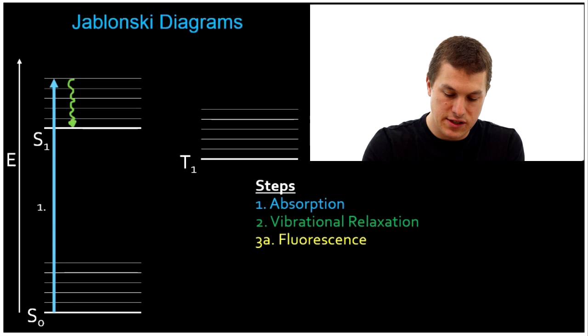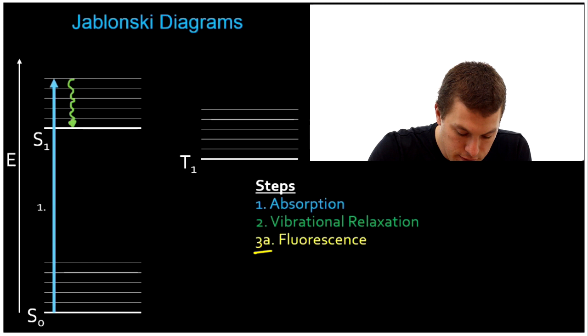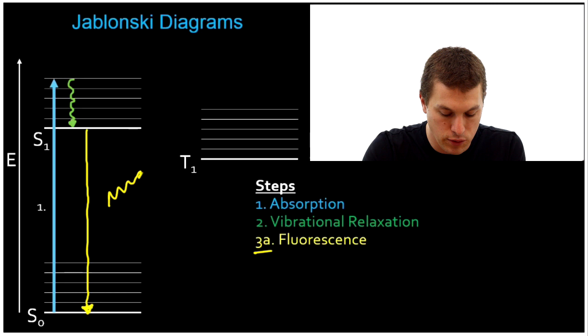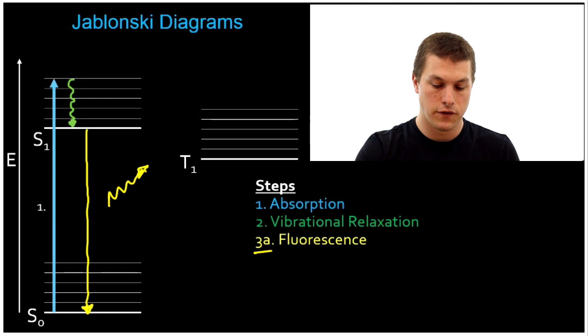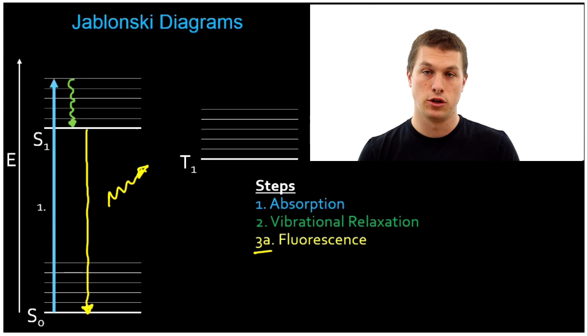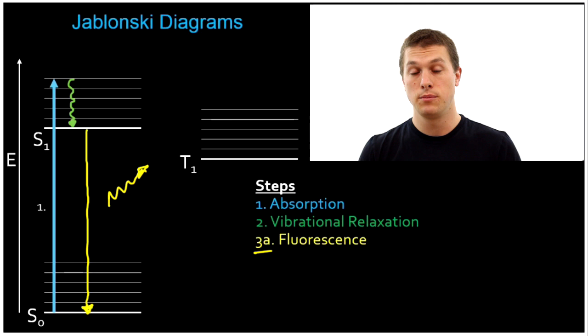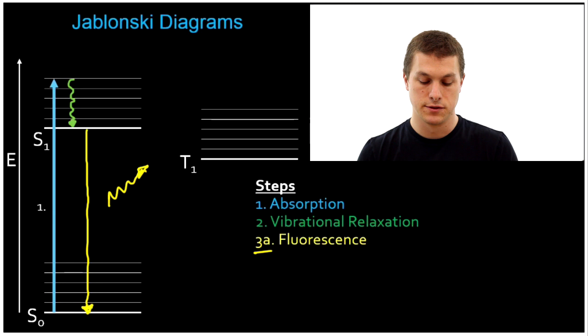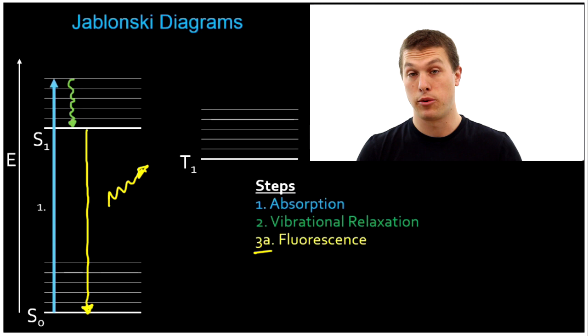Then what can happen? We're already at fluorescence. I've labeled fluorescence 3a over here, because there's a bunch of different things that can happen at this point, but one of them is fluorescence. Our electron relaxes all the way down to the ground singlet state and gives off a photon. That emitted photon is lower in energy than our first absorbed photon, because our absorbed photon went into an excited electronic state and some of that energy was given off as heat. So that's your answer as to why UV light shined on these fish gives off visible light — UV light shines on them, some of that energy is lost through vibrational relaxation, and then it emits a photon as fluorescence.